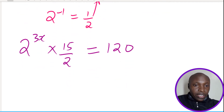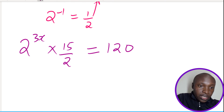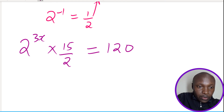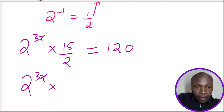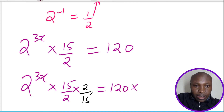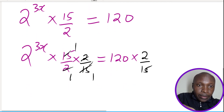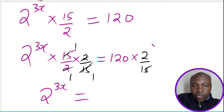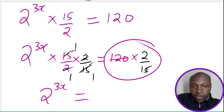To solve for x, we need to isolate 2^(3x). We get rid of 15/2 from the left hand side by multiplying both sides by its reciprocal, which is 2/15. The 15/2 and 2/15 cancel on the left side, leaving 2^(3x). On the right side, 120 multiplied by 2/15 gives us: 120 divided by 15 is 8, then 8 times 2 is 16.